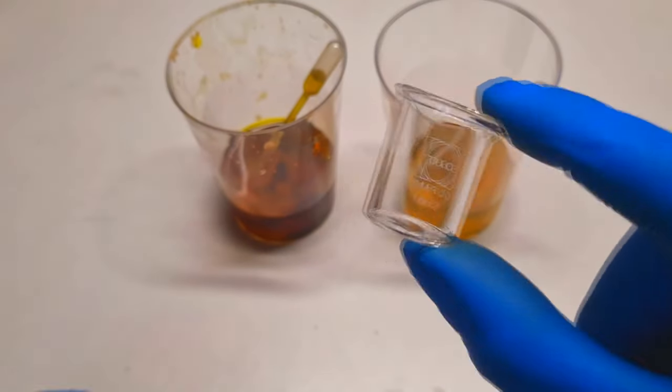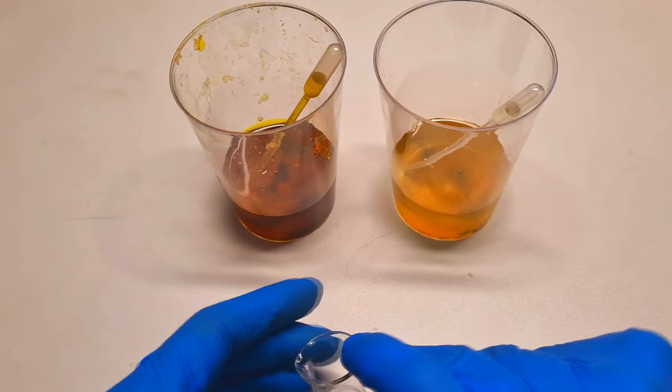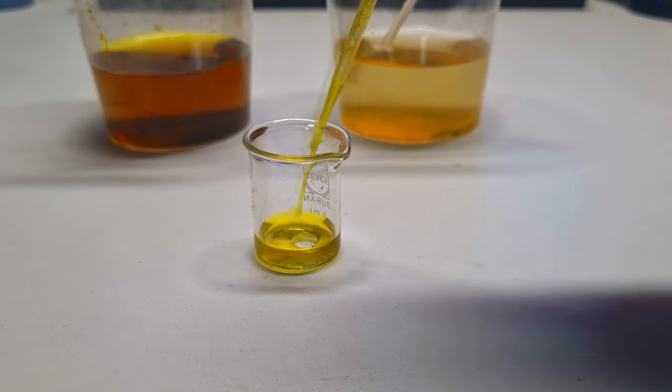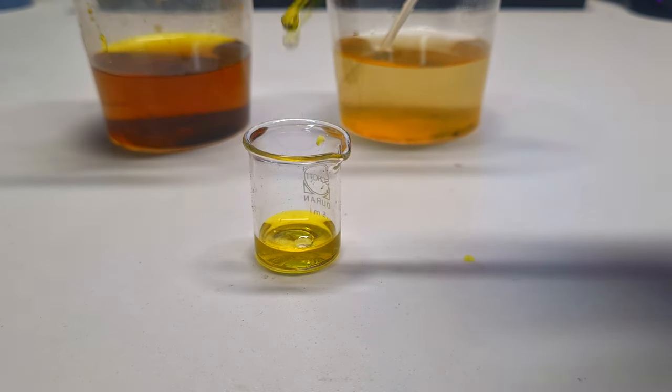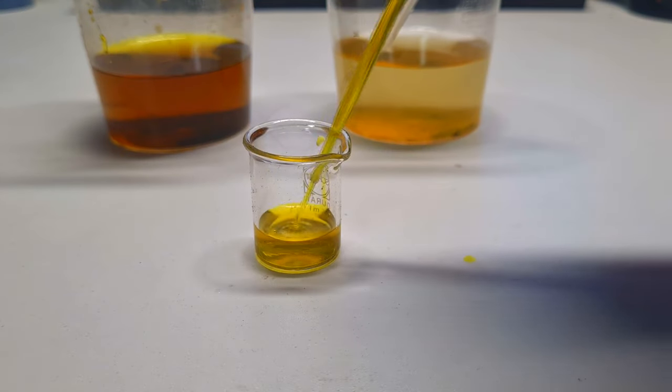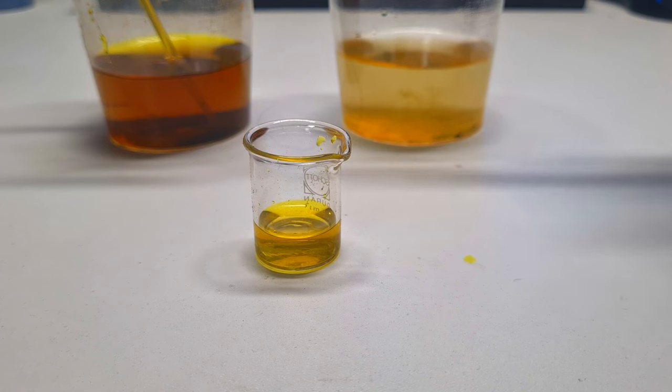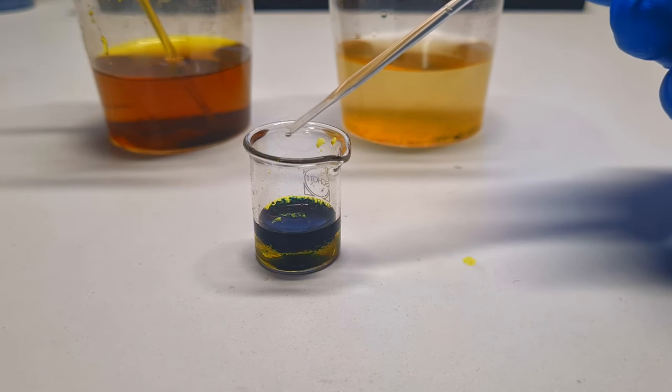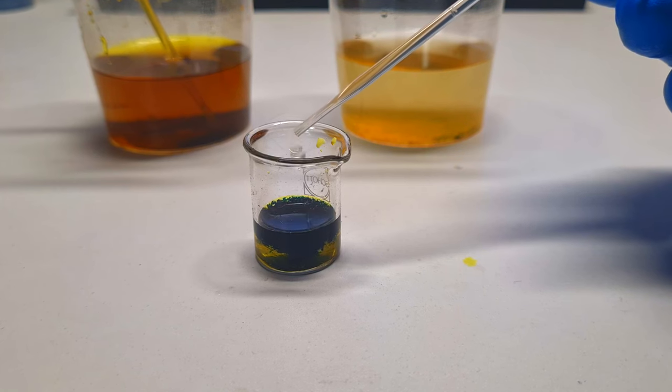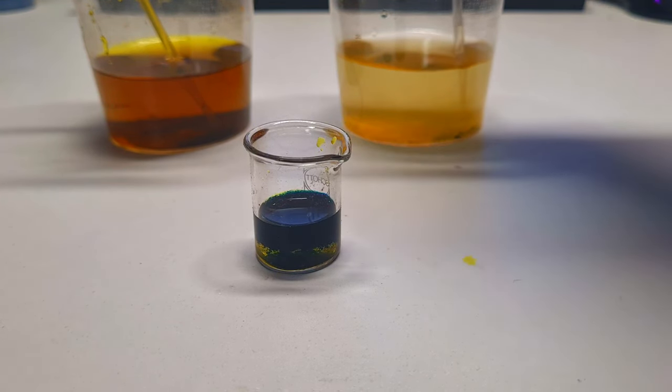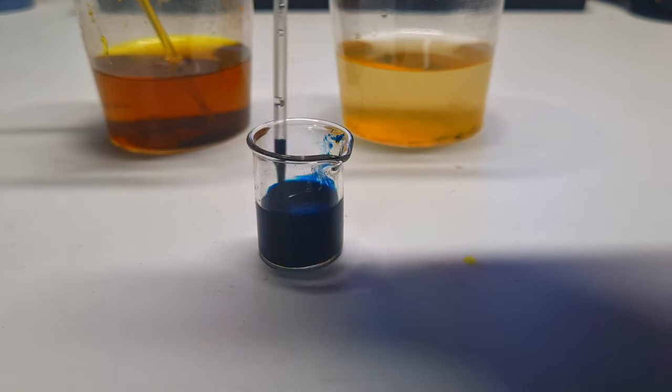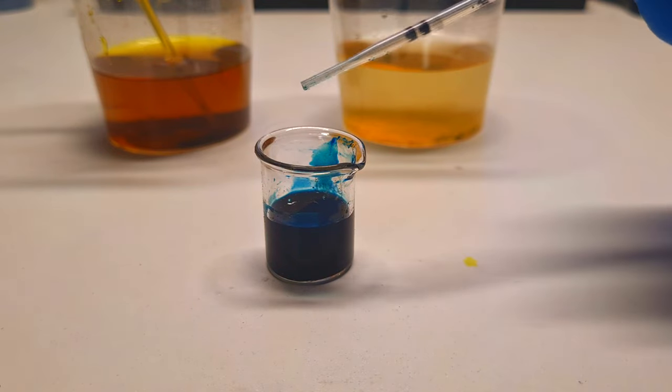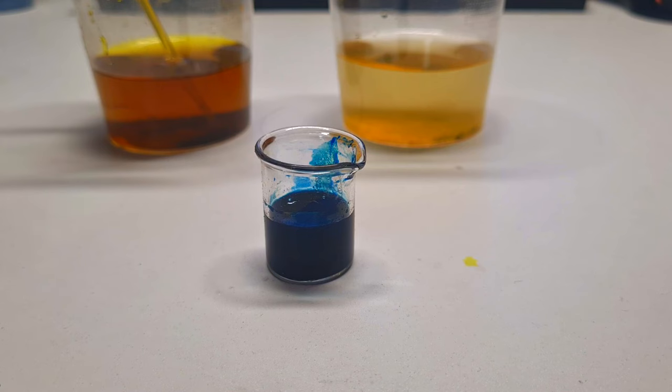Here I have my 5ml beaker. First I will add the potassium hexacyanoferrate solution. And now I will add the iron sulfate. And immediately I will get Prussian blue. Really cool.